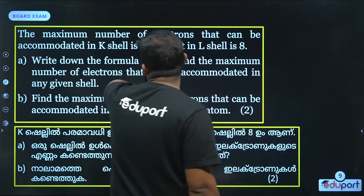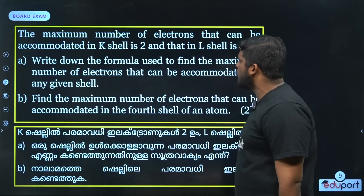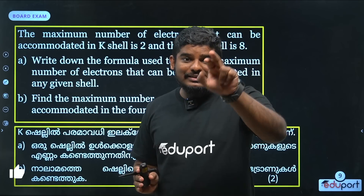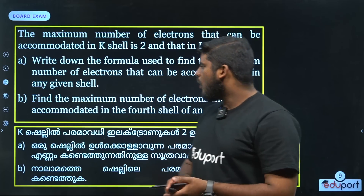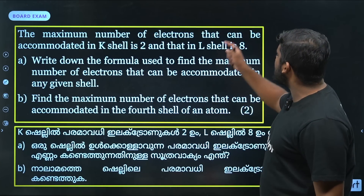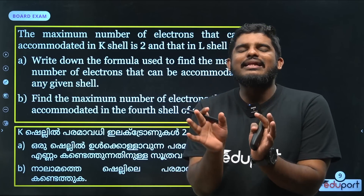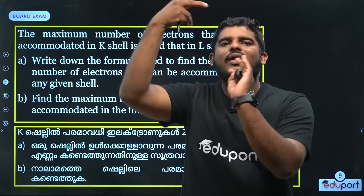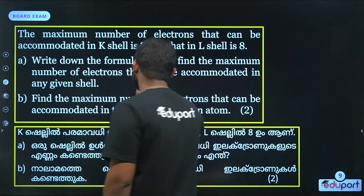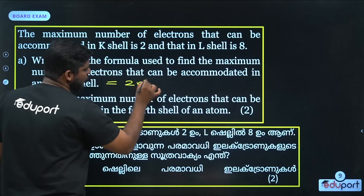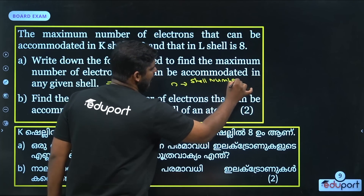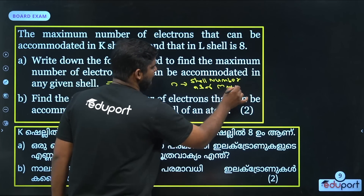The maximum number of electrons in the K shell is 2 and in the L shell is 8. Write down the formula for the maximum number of electrons in any shell. The formula is 2n², where n is the shell number.